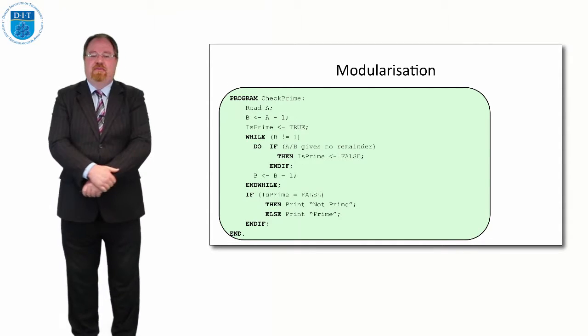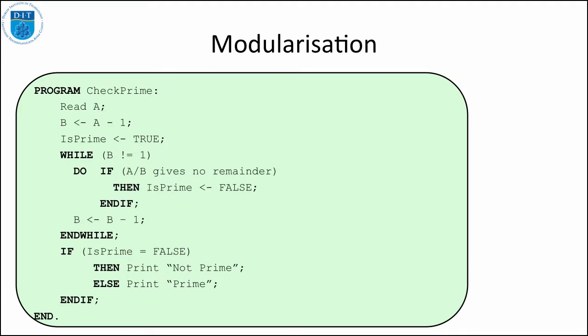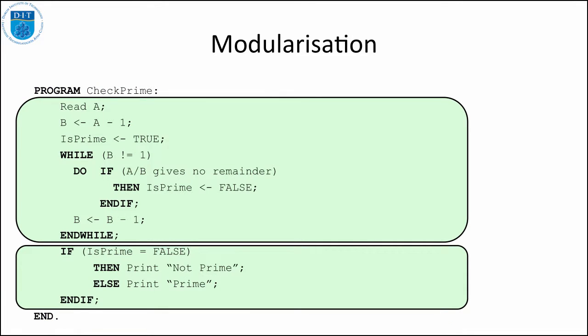So if we think about our prime number algorithm again, which we did, we know there's in essence two parts to it. There's the first part of the program that checks if the number is prime, and then there's the second part of the program that prints out whether the number is prime or not.